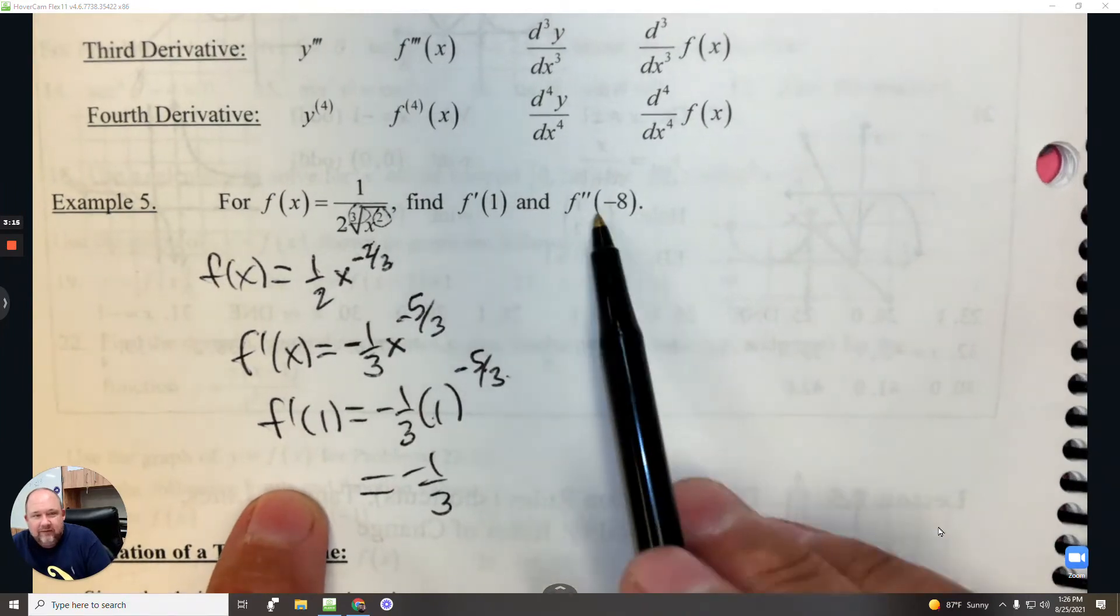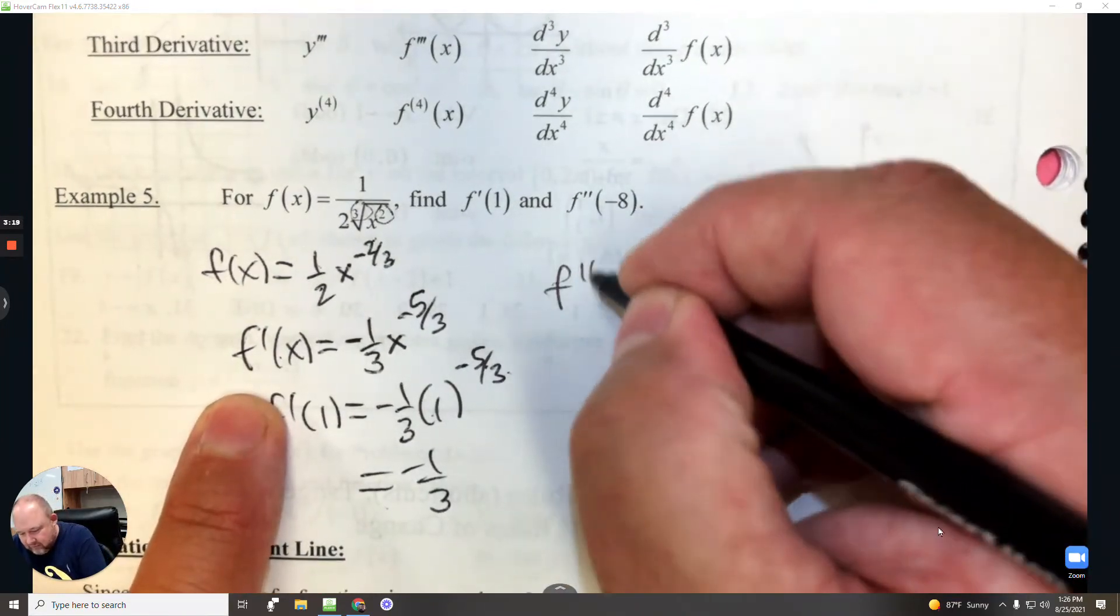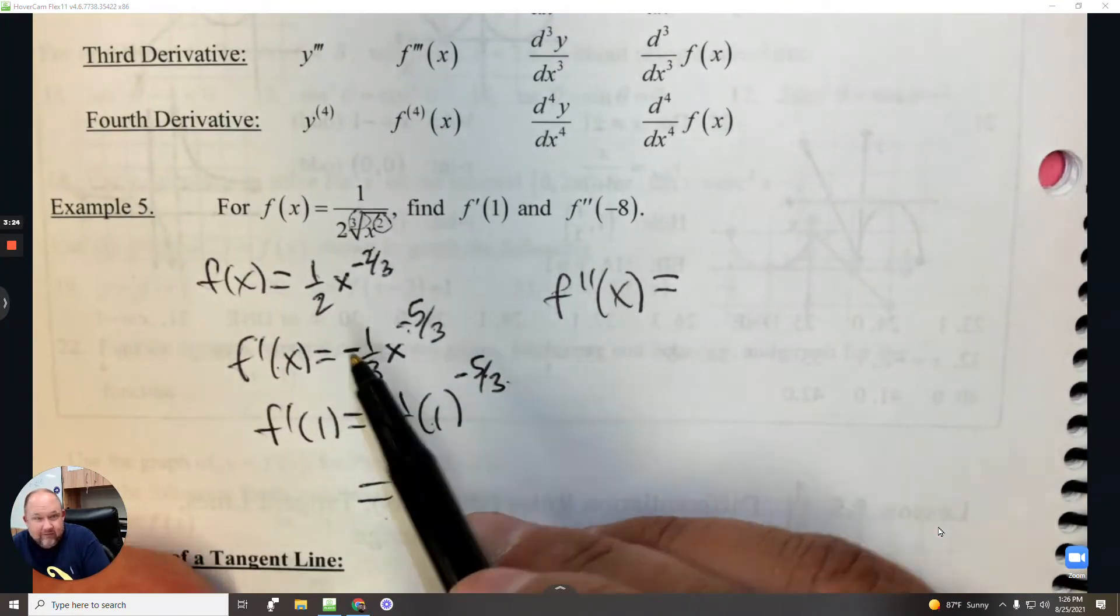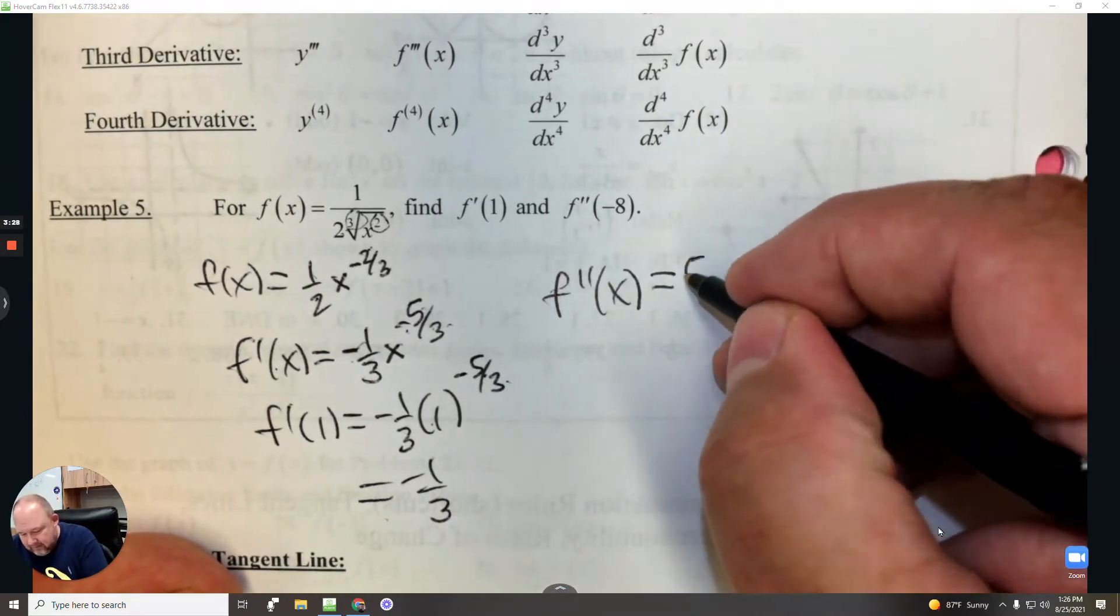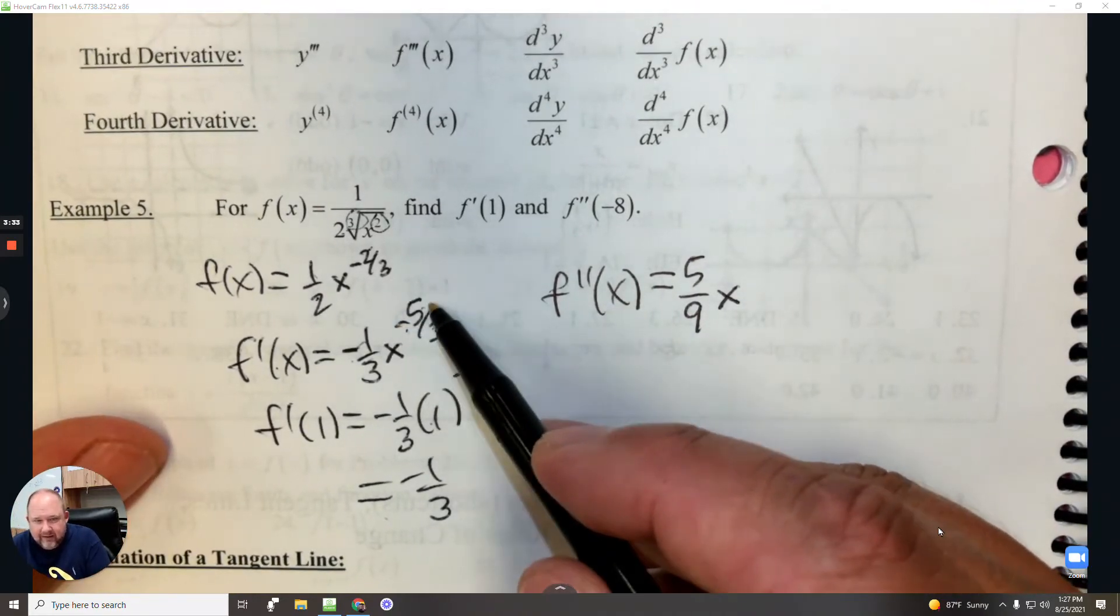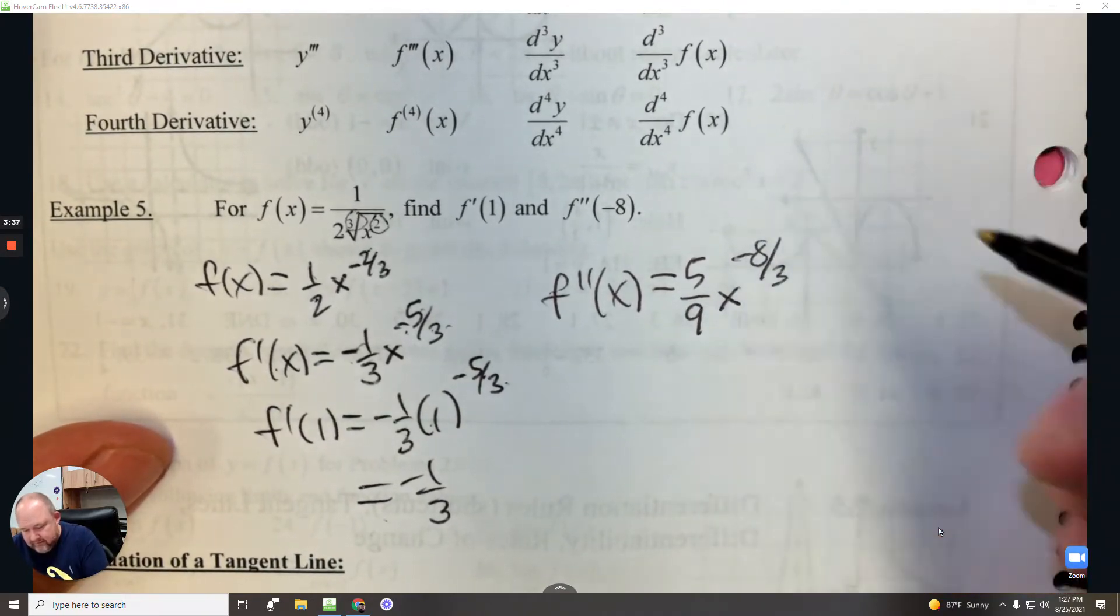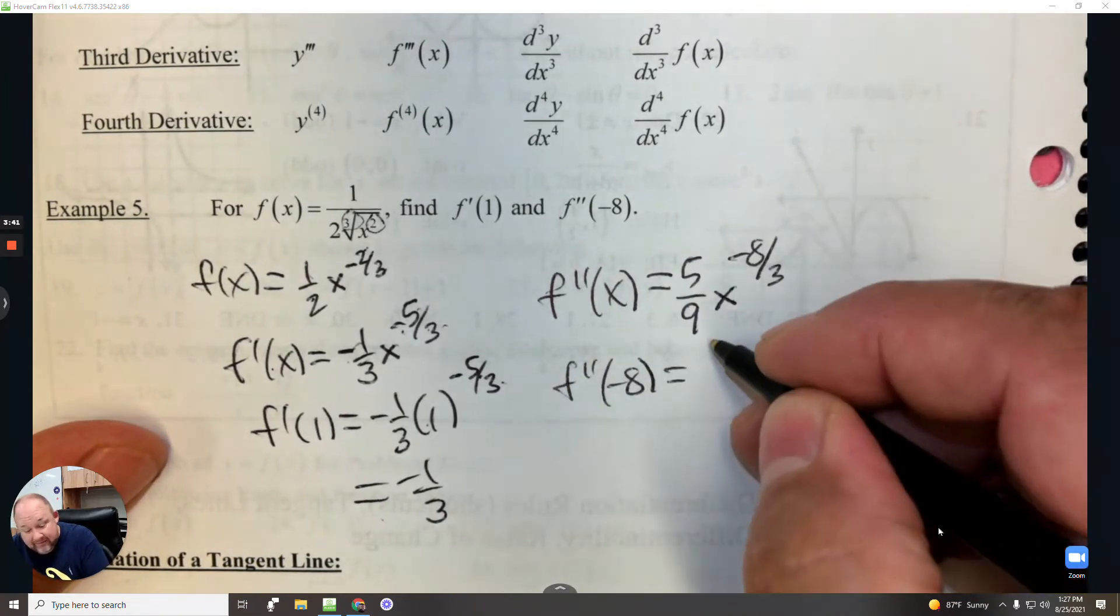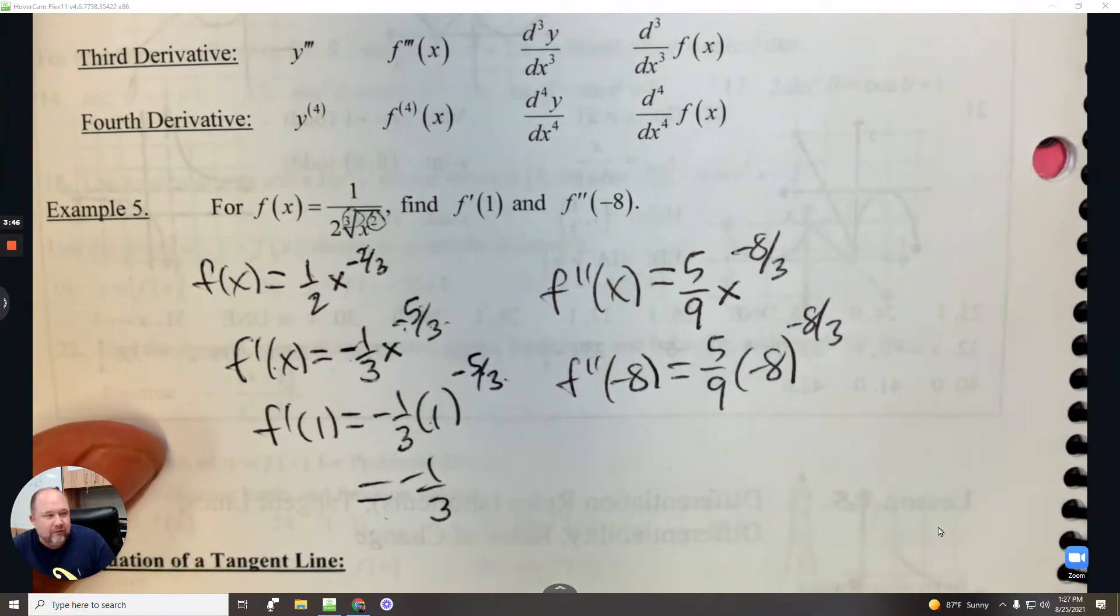Next I need to find the second derivative. So I come back here and take the derivative of the derivative. So the second derivative, a negative times a negative is positive. And when I multiply them together, it's positive 5 over 9. And again I'm going to subtract 1. So negative 5 take away 3 is negative 8 over 3. And then I'm going to plug in negative 8. And there's your answer.